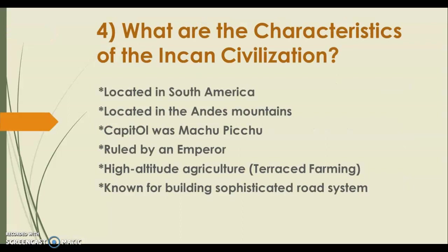What are the characteristics of the Incan civilization? They were located in South America — they are not a Mesoamerican civilization because they did not live between North and South America. The only two Mesoamerican civilizations are the Mayans and the Aztecs. The Incans were located in the Andes Mountains. So: Mayans lived in tropical rainforests, Aztecs lived in dry arid deserts, and the Incans lived in mountains.